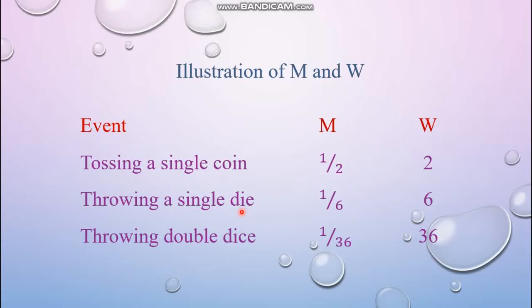For a single die: the macrostate is that you are throwing one die, and corresponding to that macrostate the total number of microstates is six — 1, 2, 3, 4, 5, and 6. So the thermodynamic probability is 6. Now if you take two dice and throw them together, you can have combinations: 1+1, 1+2, 1+3 up to 1+6, then 2+1, 2+2, and so on — constituting 36 possible events. The mathematical probability of each event is 1/36, and the thermodynamic probability is simply 36, which equals p plus q.